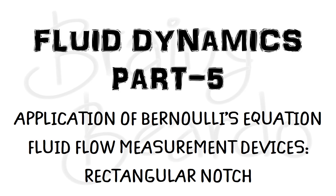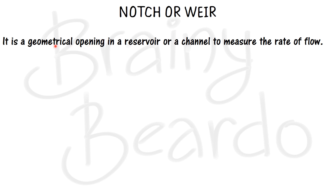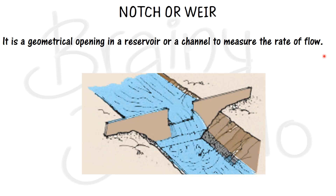Hello all, welcome to my channel Brainy Beardew. In this session we'll be learning about notches and weirs, especially rectangular notches. A notch or a weir is used to measure the discharge through open channel flow like a river or a fluid flowing in a canal. We can define it as a geometrical opening in a reservoir or a channel to measure the rate of flow.